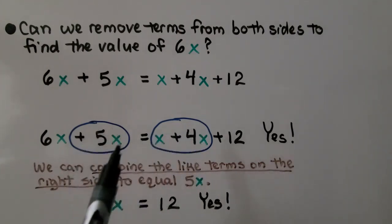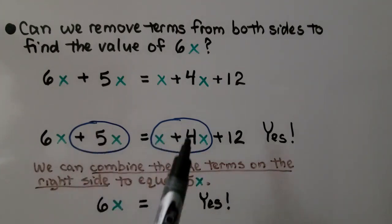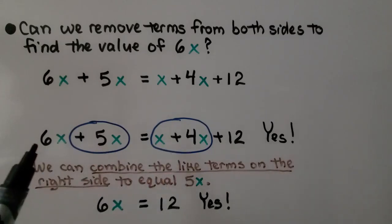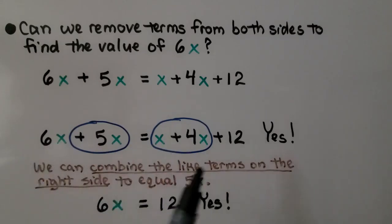So we can remove 5x from this side, 5x from this side, and we're left with 6x is equal to 12. So yes, we can remove terms from both sides to find the value of 6x.